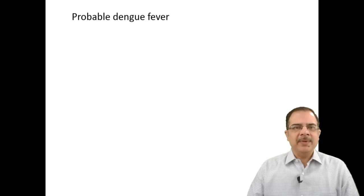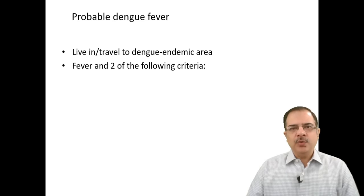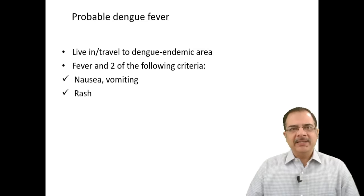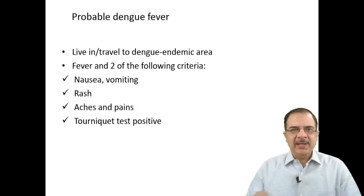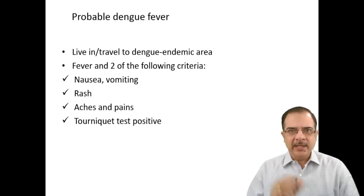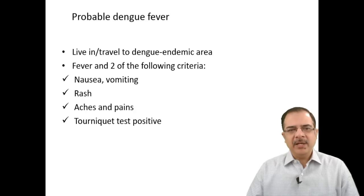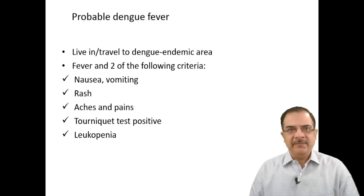A probable case of dengue fever is defined as a patient in or traveling to an endemic area, with fever plus any two of these criteria: nausea, vomiting, skin rash, aches and pains, or a positive tourniquet test. The tourniquet test involves inflating the BP cuff between systolic and diastolic BP, then marking a one-inch square area on the forearm — more than 10 petechiae is a positive test; in dengue hemorrhagic fever it is usually more than 20. Leukopenia is also present. Even without lab confirmation in an endemic area, a probable case must be reported.